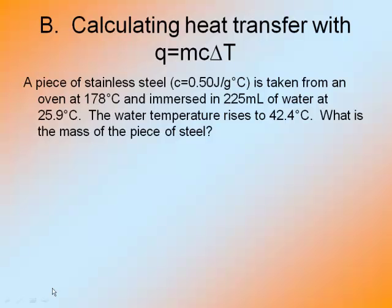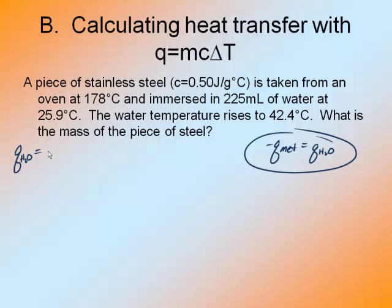A piece of stainless steel, with specific heat given, is taken from an oven at 178 degrees Celsius, really hot steel, and it's immersed in 225 milliliters of water at 25.9 degrees Celsius. The water's temperature rises to 42.4 degrees Celsius. What is the mass of the piece of steel? So the process doesn't change. I still remember that the Q of the metal is exothermic because it's much hotter than the water.